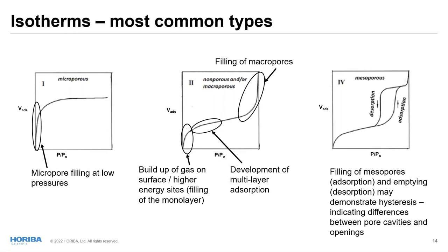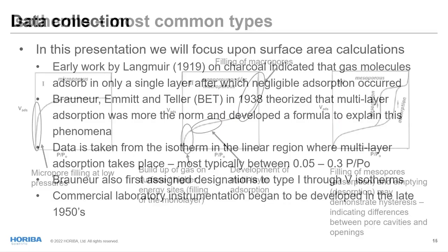The most common isotherm types are 1, 2, and 4, representing microporous, macroporous, and mesoporous materials respectively. For surface area calculation, the critical region of the isotherm is the development of multilayer adsorption: micropore filling at low pressures, buildup on the surface filling the monolayer, then multilayer adsorption, and finally filling of macro or mesopores depending on the material type.